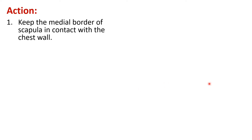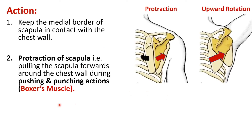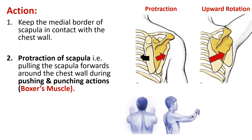The serratus anterior muscle has 3 actions. First, it keeps the medial border of the scapula in contact with the chest wall. Second, it is involved in protraction of the scapula — that is, pulling the scapula forwards around the chest wall. This is done when a person performs pushing and punching actions, as seen here where a person is pushing against a wall and another is punching.